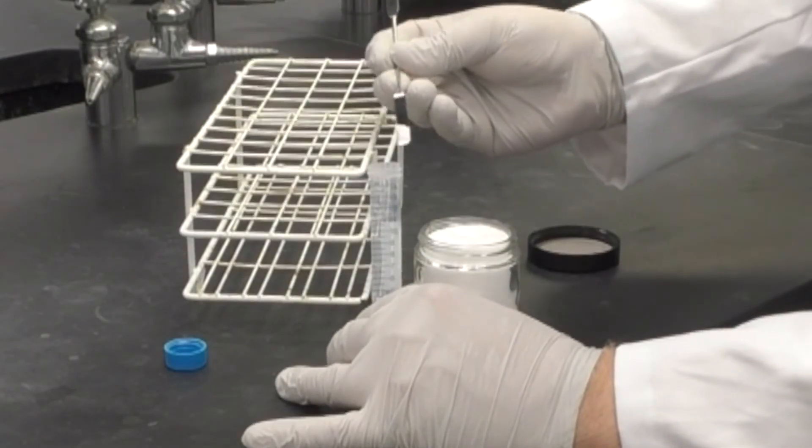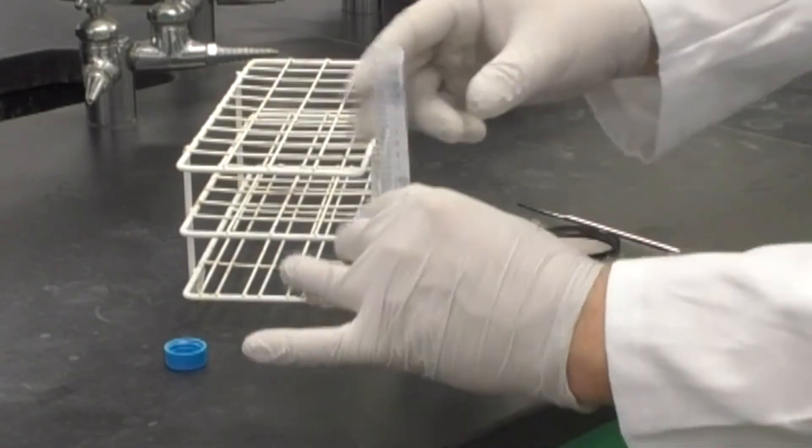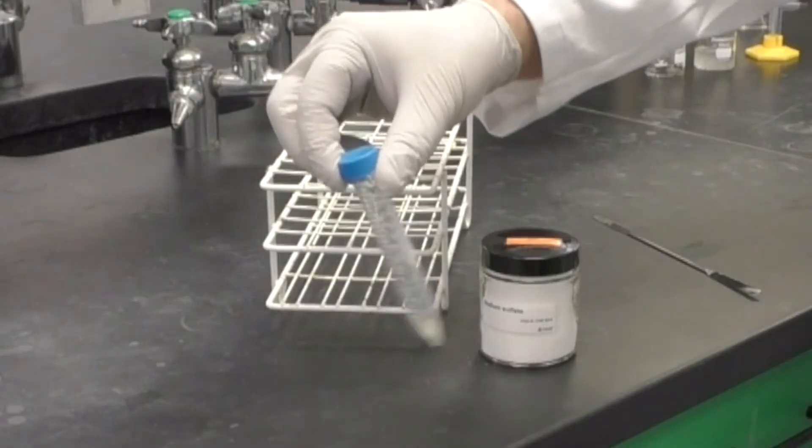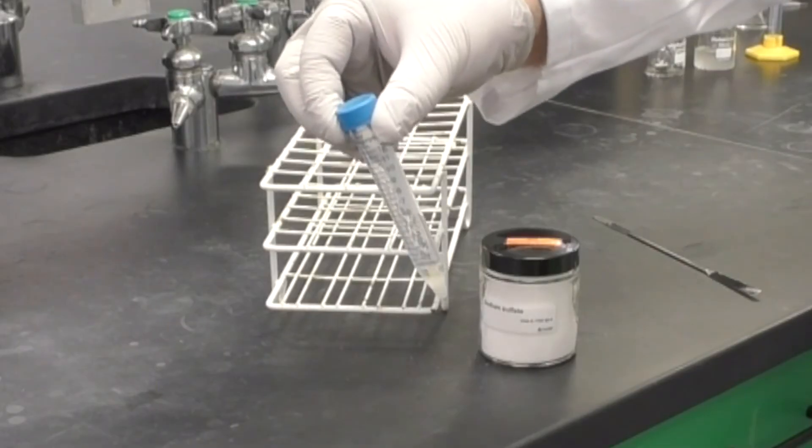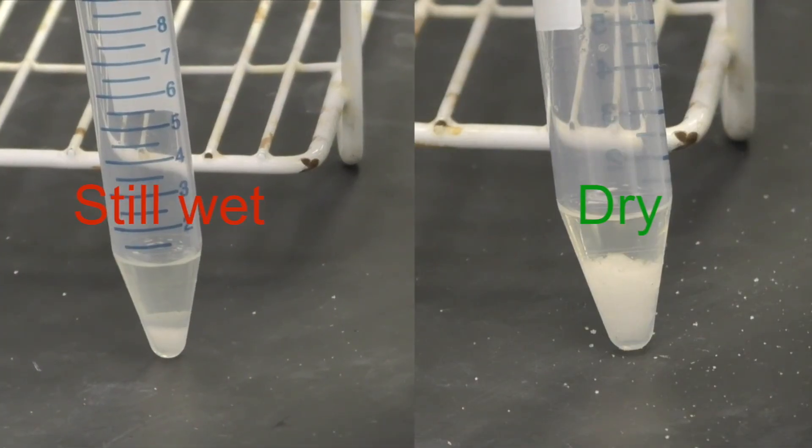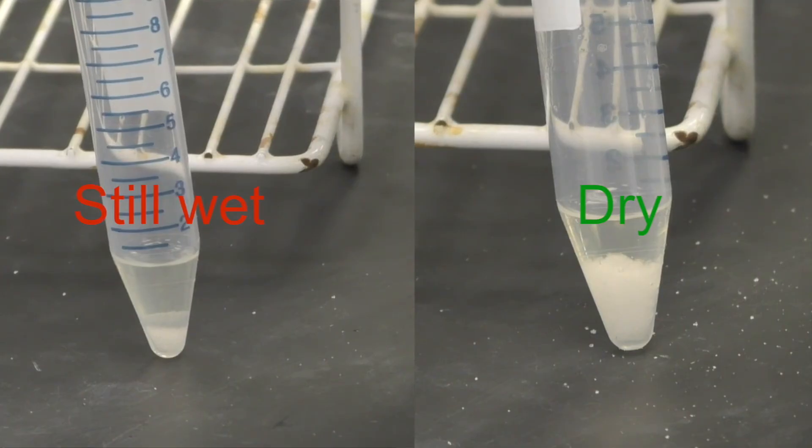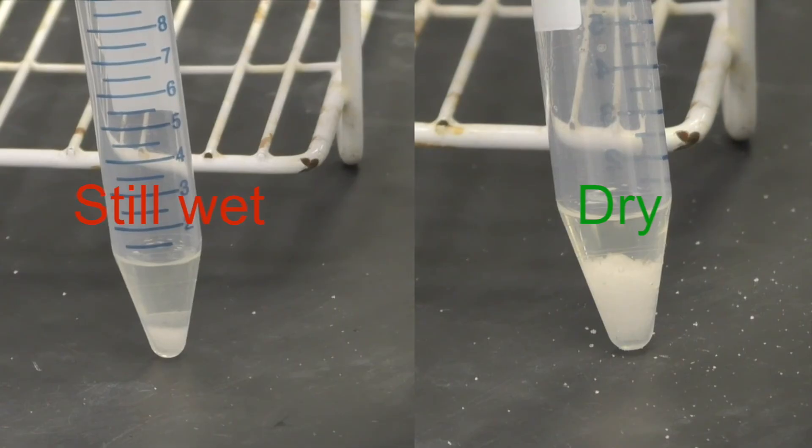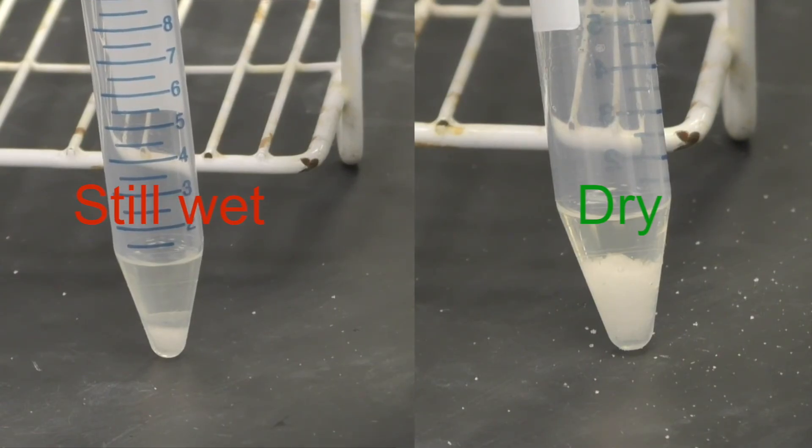To dry your ester, add a micro spatula tip full of sodium sulfate to your tube, cap it, and give it a good shake. Continue to add the sodium sulfate a little at a time until the solid is obviously white and you can clearly see some granules at the top. This means all the remaining water has been removed.